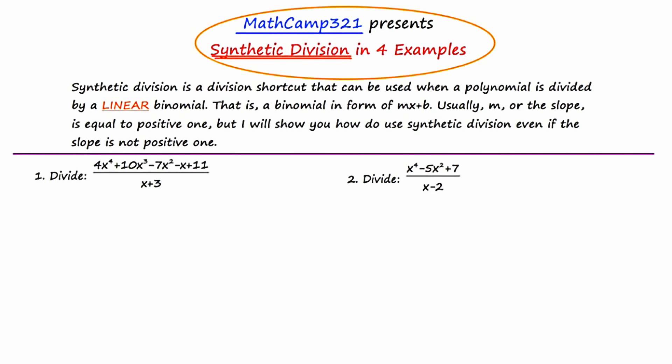The first part of synthetic division is to take the divisor and set it equal to 0, and then solve for x in that little equation that you formed. That value, negative 3, is very important in our synthetic division. This value is going to be placed in the upper left of the array of numbers that we're going to make — I'm going to place it in what I call a cubby. The remaining numbers on that same row are going to come from the coefficients of the polynomial itself: 4, 10, negative 7, negative 1, and 11.